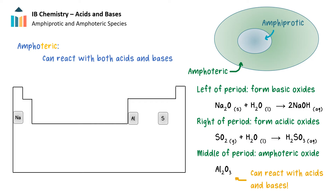We should also note that amphiprotic species are just a subset of a larger group of amphoteric species — those substances that can react with both acids and bases. In examining the periodic table trends of the oxides in period 3, the basic metal oxides will form bases in water. For example, sodium oxide reacts with water to form sodium hydroxide, a strong base. As we'll see, a strong base can react with an acid in a neutralization reaction. However, the base will not react with another base.